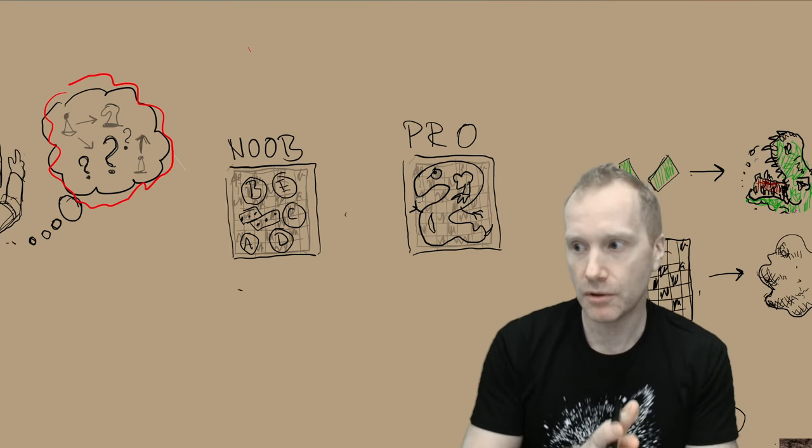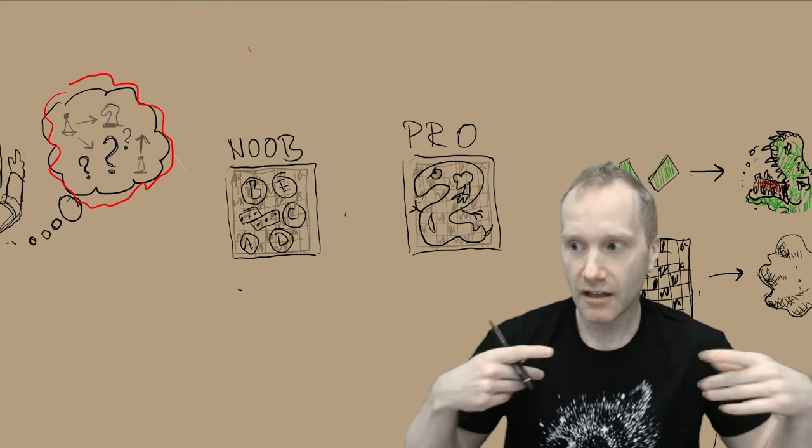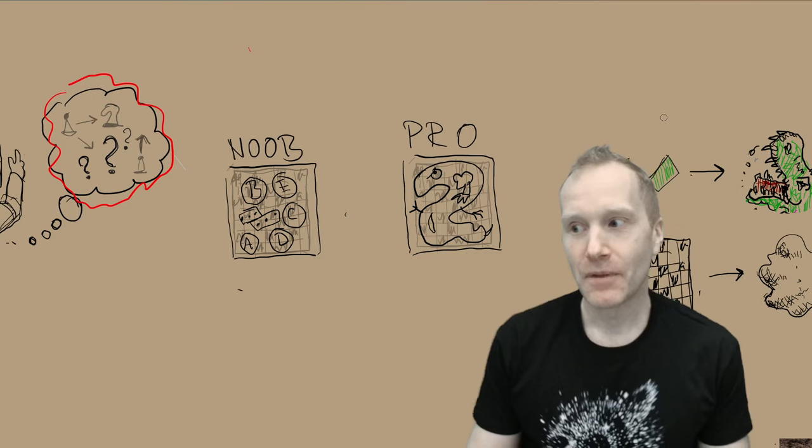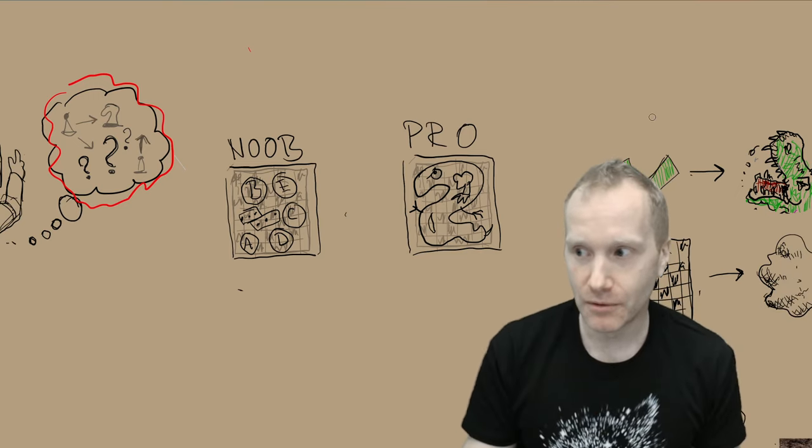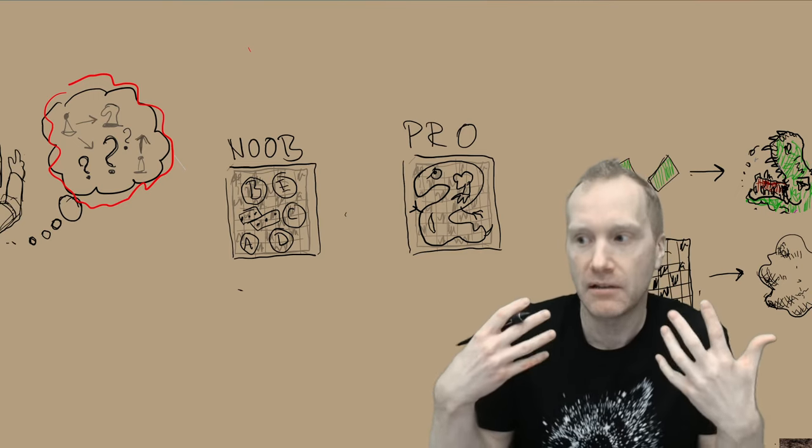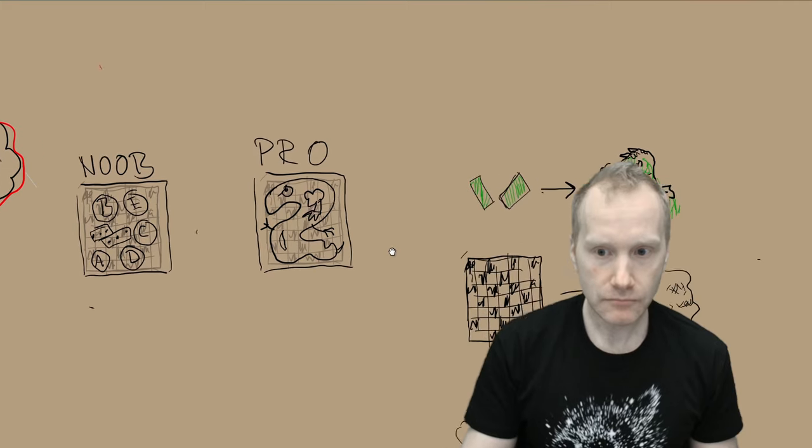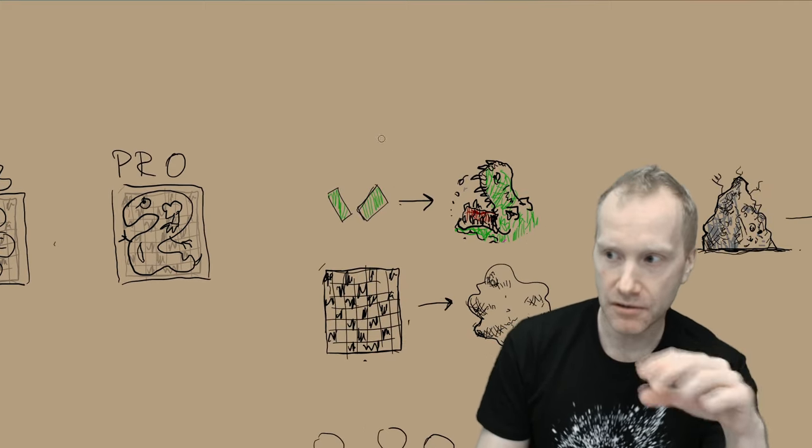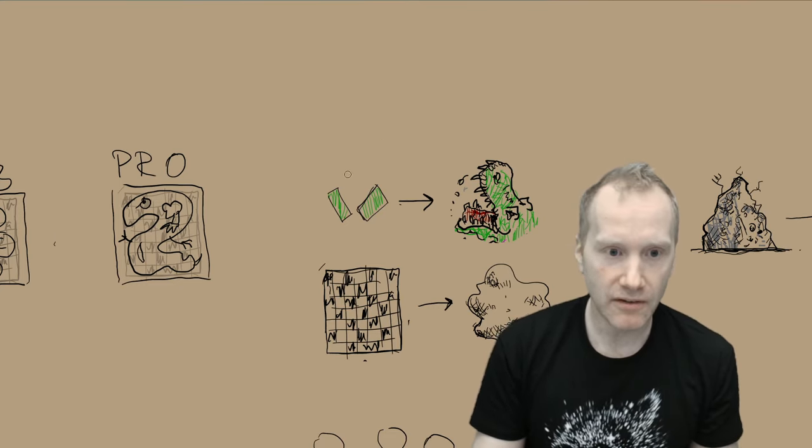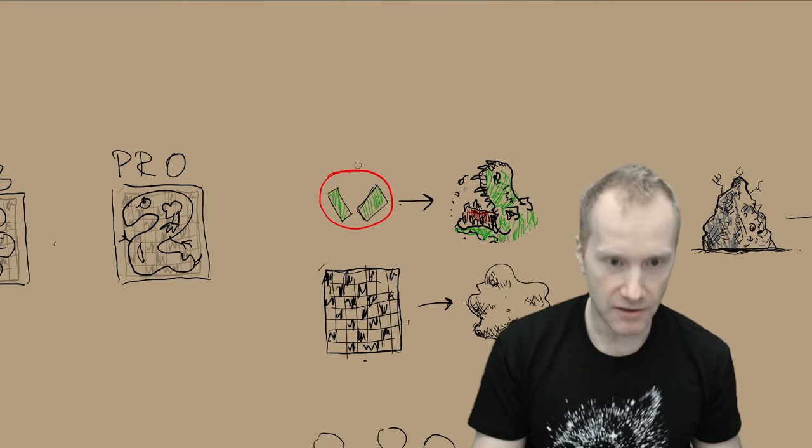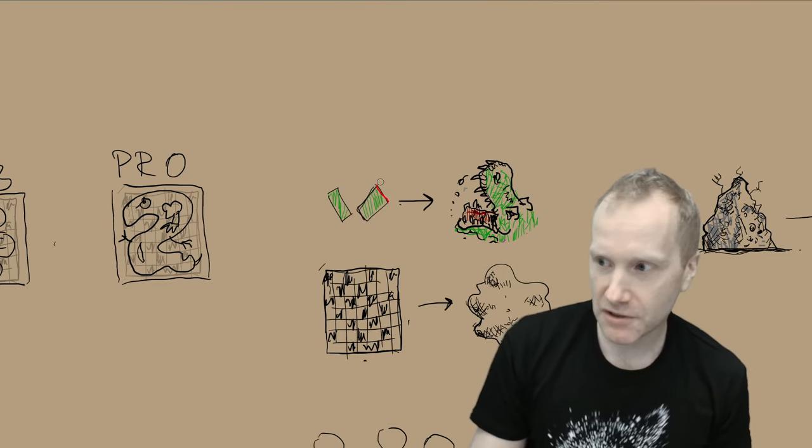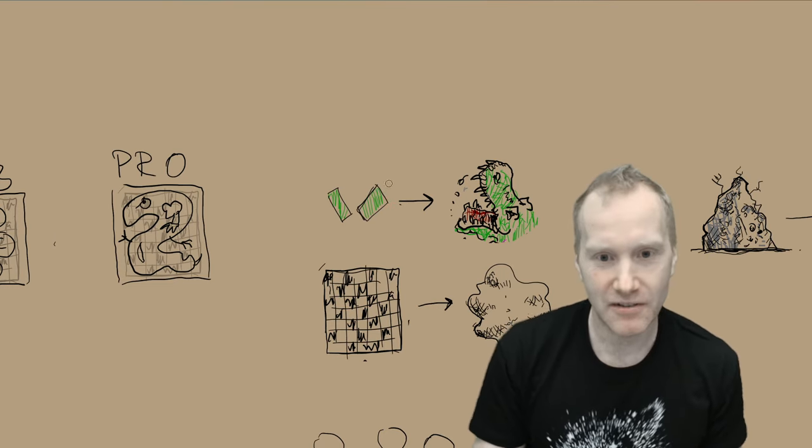Pro chess players are really good at remembering positions if they are valid positions. They go back at remembering positions just like the noob if it's just random nonsense. So similarly to you would be able to say that's a cat drawing, that's a dog drawing, because you as a human are very good at that, just like the pro chess player. But if it's just random noise, you wouldn't be able to remember what that was.